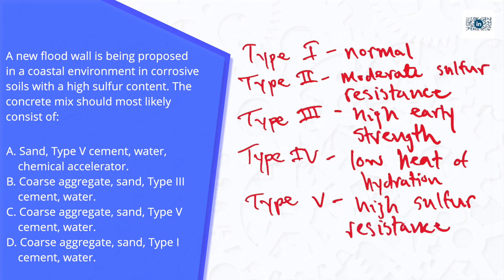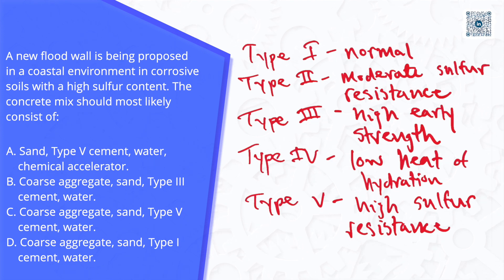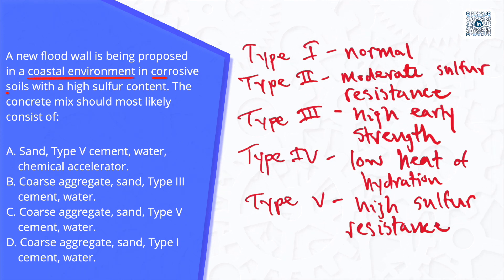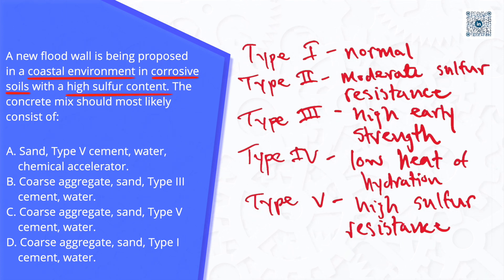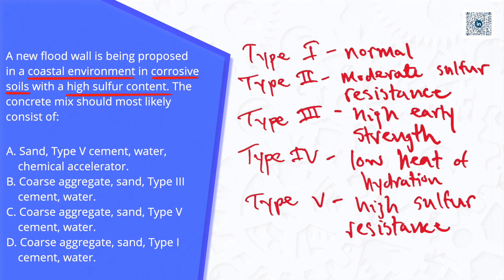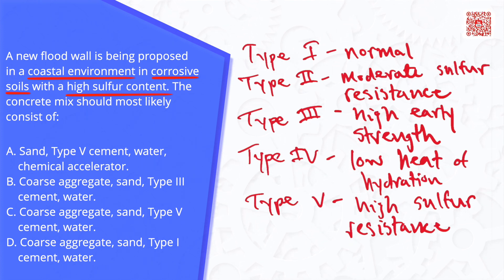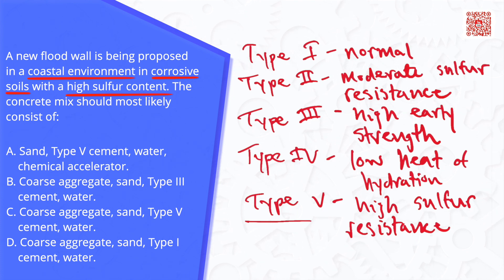Looking back at the problem statement, we see that the new floodwall is going to be in a coastal environment with corrosive soils with a high sulfur content. So looking at the different types of cement we just discussed, we can see that Type 5 cement should be used because it has high sulfur resistance.